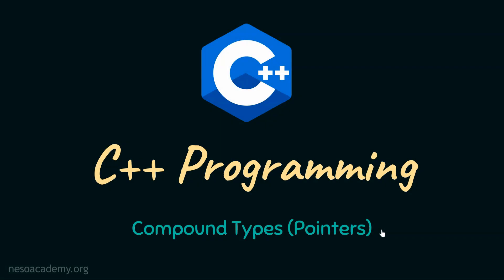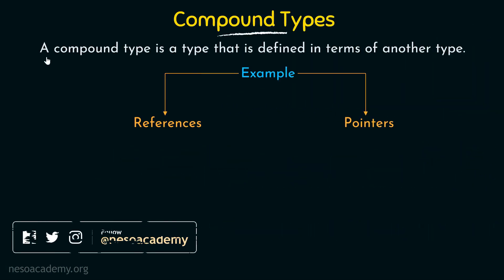In this lecture we are going to continue studying about compound types and here we are going to discuss in detail about pointers. In the previous lecture we have seen about references and here we will see in detail about what are pointers. We have been discussing compound types and we have already said that a compound type is a type that is defined in terms of another type. In this lecture we are going to study in detail about pointers.